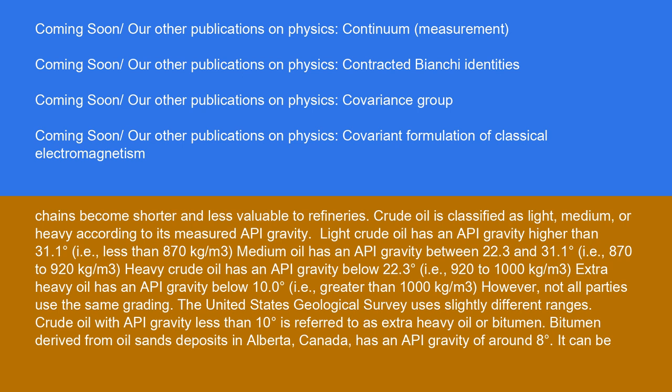Light crude oil has an API gravity higher than 31.1 degrees, i.e. less than 870 kg per cubic meter. Medium oil has an API gravity between 22.3 and 31.1 degrees, i.e. 870 to 920 kg per cubic meter.